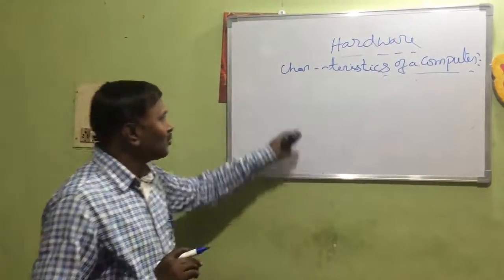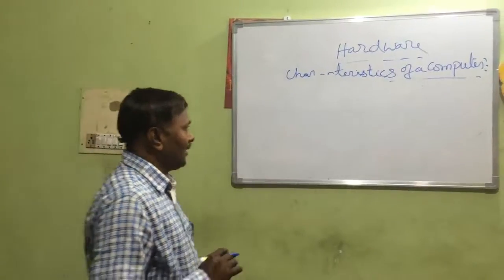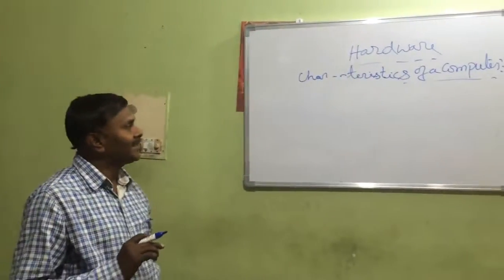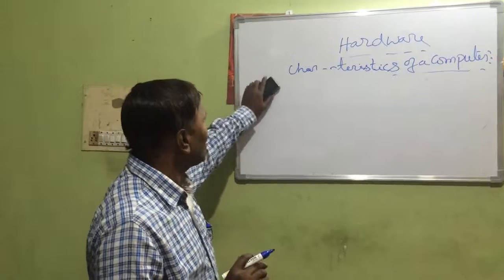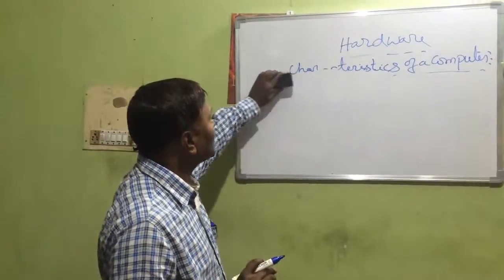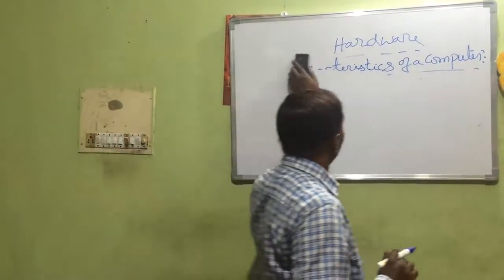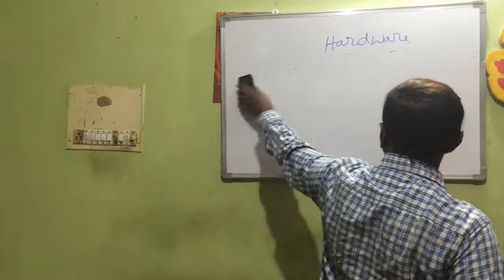So these are all the characteristics of a computer: speed, memory power, accuracy, delicacy, and versatility. These are all the characteristics of a computer.